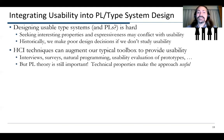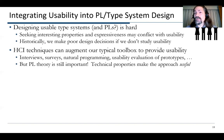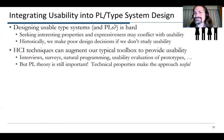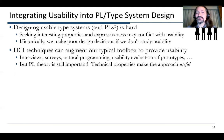Fortunately, HCI techniques can augment our typical toolbox to help us provide usability as well as all the other things we want in languages. We use interviews with experts, surveys, natural programming to get ideas about how to design a language in a natural way, and usability evaluation of prototypes — all those things helped. Of course, PL theory is still important. Pliers is a way of integrating usability into design tasks that you already do, and it does include proving technical properties, because that's what provides the guarantees that make a new type system useful.